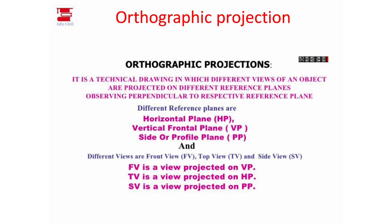There are three different reference planes: horizontal plane, vertical plane, and profile plane. In orthographic projection, we have three different views. Front view is the view projected on the vertical plane (VP), top view is projected on the horizontal plane, and side view is projected on the profile plane.